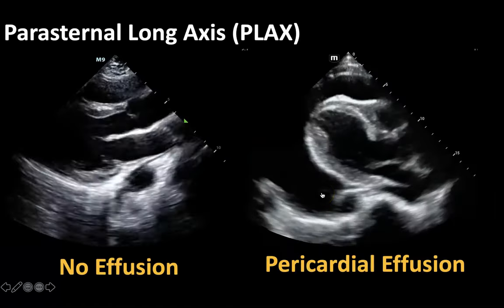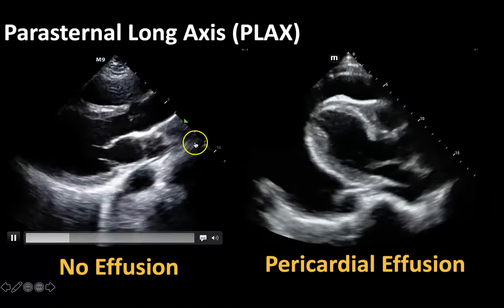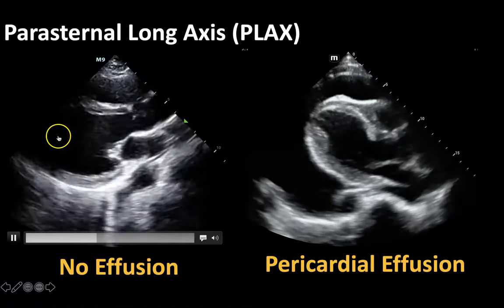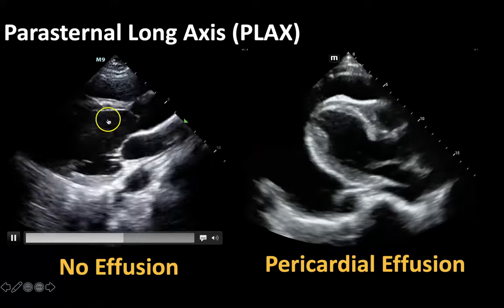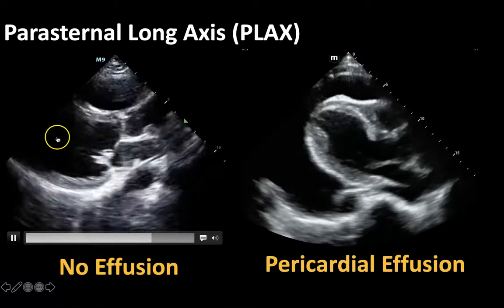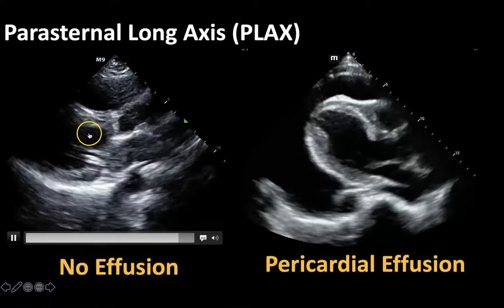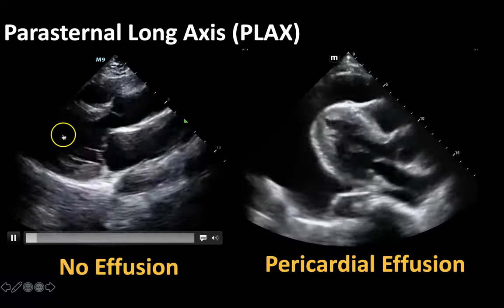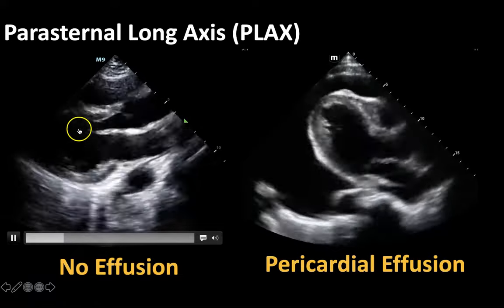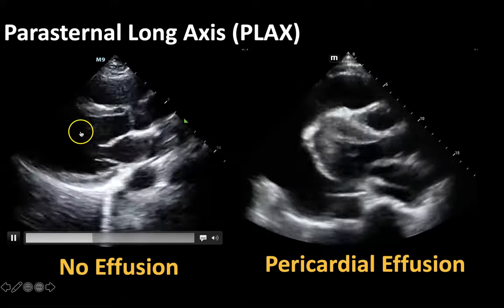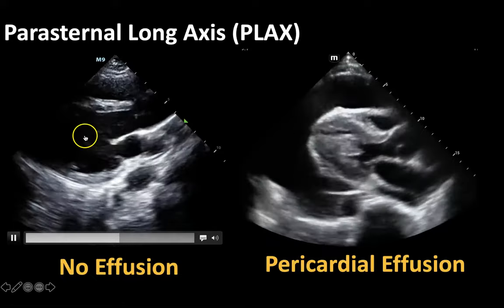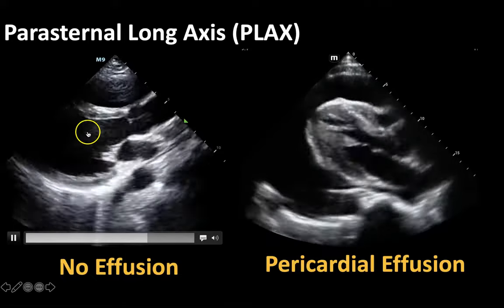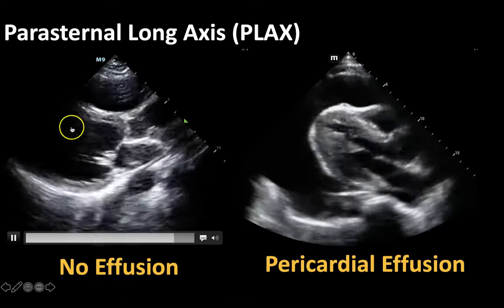So we're going to be looking for black stripes. You see here that the blood inside the heart is also fluid, which is black — anechoic, meaning no echoes — so the blood in the heart will look the same as the blood outside the heart. What we're looking for is black lines outside your heart.